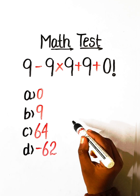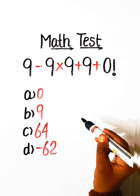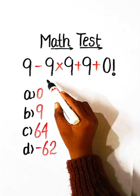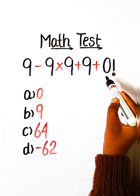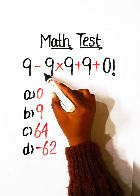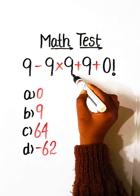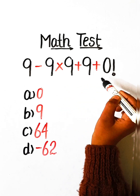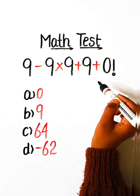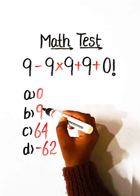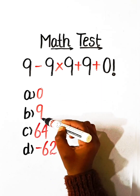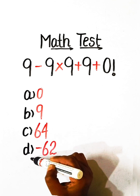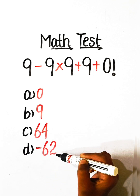Hello everyone, welcome to my YouTube channel. In this video we will solve this simplification equation: 9 minus 9 multiply by 9 plus 9 plus 0 factorial equals to what? Option A: 0, Option B: 9, Option C: 64, or Option D: minus 62.